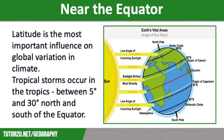Why do most tropical storms happen close to the equator? Latitude is the most important influence on global variation in climate. Tropical storms occur in the tropics between the Tropic of Cancer and the Tropic of Capricorn, between 5 degrees and 30 degrees north and south of the equator.